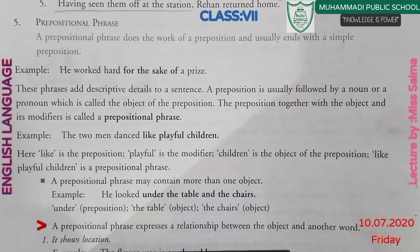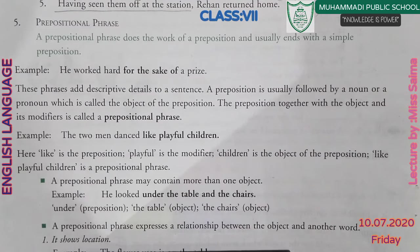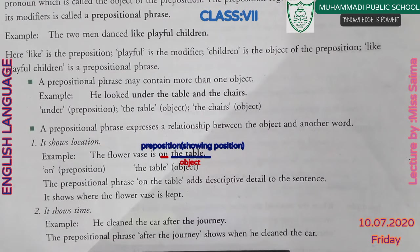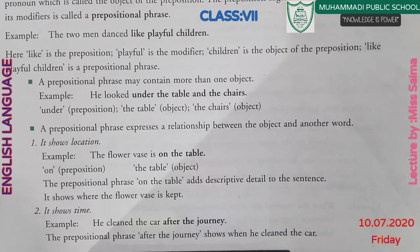A prepositional phrase expresses a relationship between the object and another word. It can show location. For example: 'The flower vase is on the table.' Here, 'on' is the preposition, 'the table' is the object, and the prepositional phrase 'on the table' adds descriptive detail showing where the flower vase is kept.